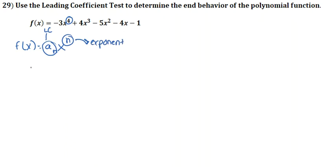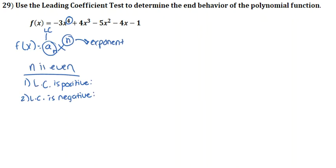When your n is even, you're going to follow one of two rules. If your leading coefficient is positive, your graph will be going up on both the left and right-hand corners. If your leading coefficient is negative, it's going to be dropping on both sides of the graph.